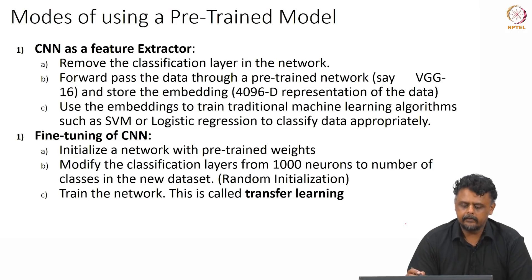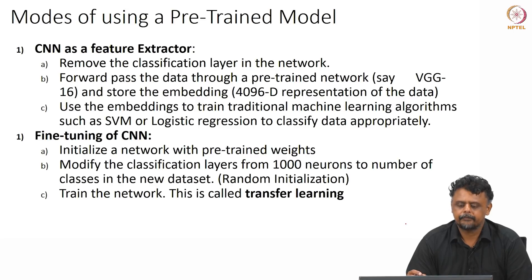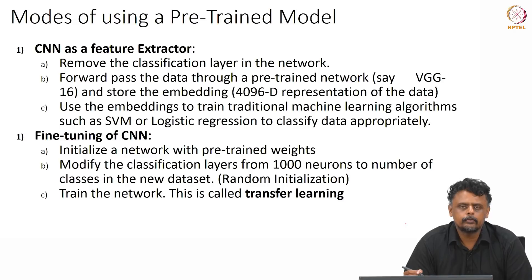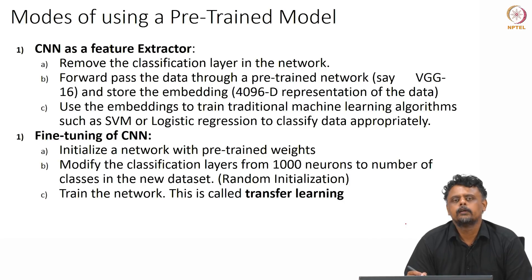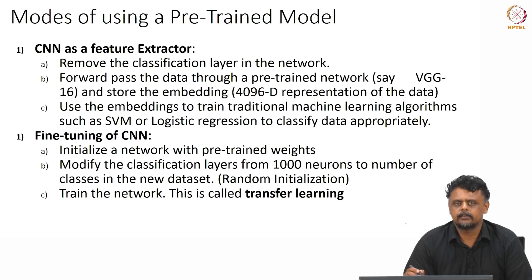The idea here is to use what we can refer to as a pre-trained model. For instance, let us say you have some data wherein you are trying to figure out a particular task — for instance, you are trying to determine a species of birds, or you have a limited number of data points to determine the make and model of a car from pictures. Maybe you have thousands of data points but that is not sufficient for training a deep neural network.